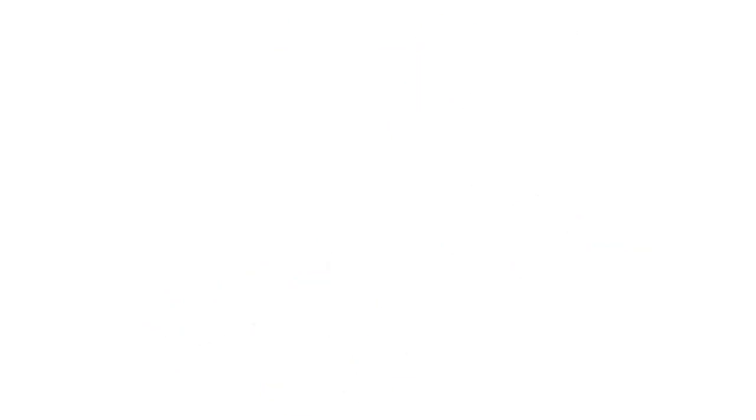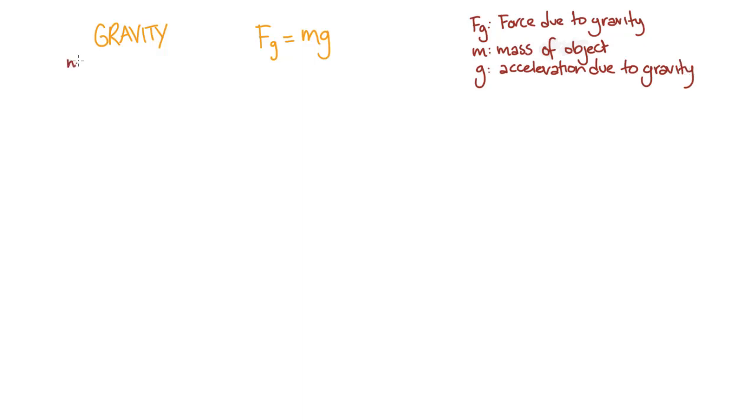Let's unpack the equation F equals mg for gravity on the Earth. Just note here that when we talk about gravity in physics, we're actually talking about gravitational forces on objects. You may remember that when we look at forces on objects, we're interested in three defining characteristics.